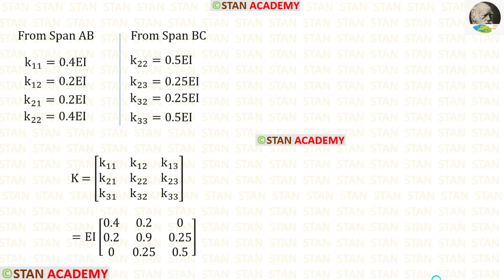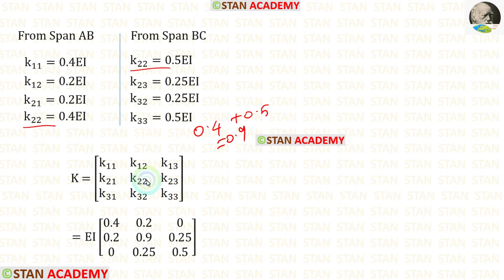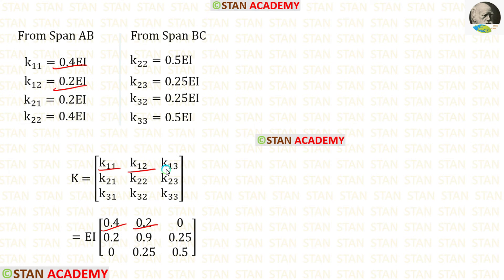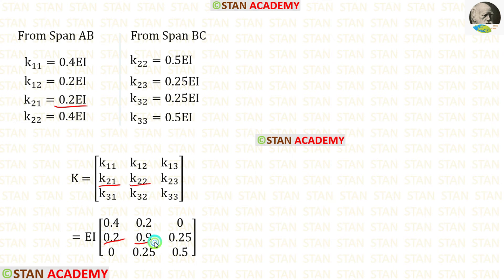We have found the stiffness matrix elements from both spans. Now let us form the global stiffness matrix. Since K22 appears in both spans, we add them: 0.4 plus 0.5 gives 0.9. K11 is 0.4, K12 is 0.2, K13 is 0 (no value). K21 is 0.2, K22 is 0.9, K23 is 0.25. For K31 there is no value.